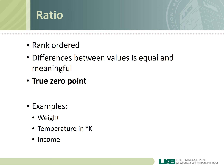Finally, we have ratio data, which is basically interval data that has a true zero point. For example, weight is ratio data because you can have zero grams of something, meaning you don't have any of it. There's also a true zero point on the Kelvin scale of temperature, and you can also have zero income.